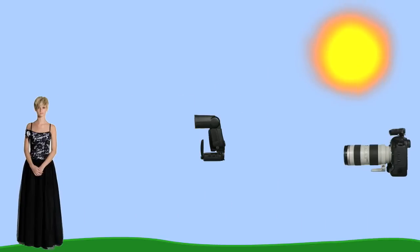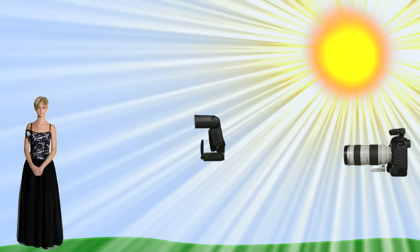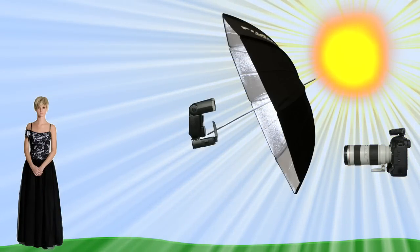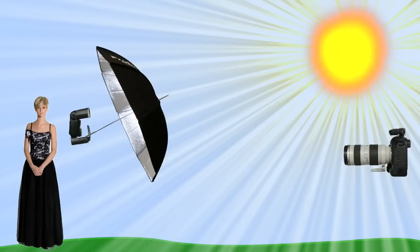The PocketWizard Mini and Flex use radio signals instead of light to communicate. That means that light has no impact on the system. It also means that obstructions are no problem. Radio signals allow the camera and the flash to communicate at much greater distances.